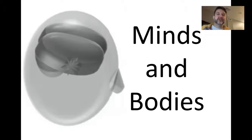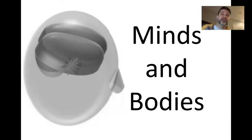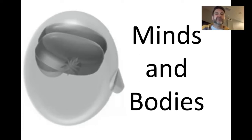Welcome to Introduction to Cognitive Science. Today we're going to be talking about the relationship between minds and bodies. So up to this point, we've developed a model for the mind. We've talked about, in broad strokes, what human minds are and where they come from. And now today we're going to be talking about what is the relationship between minds and bodies.